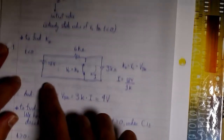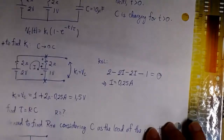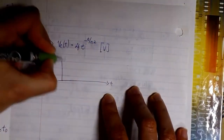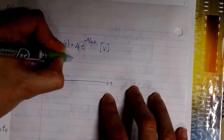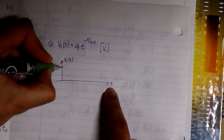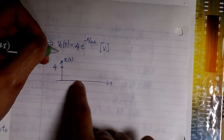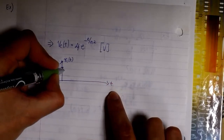We have k2 and tau, so we can write the complete expression for the voltage: Vc(t) is 4 times e to the minus t over 0.2. If we want to plot this, the initial value is 4 volts — that's exactly the moment when we move the switch to position two and it starts discharging. The voltage goes to zero exponentially.